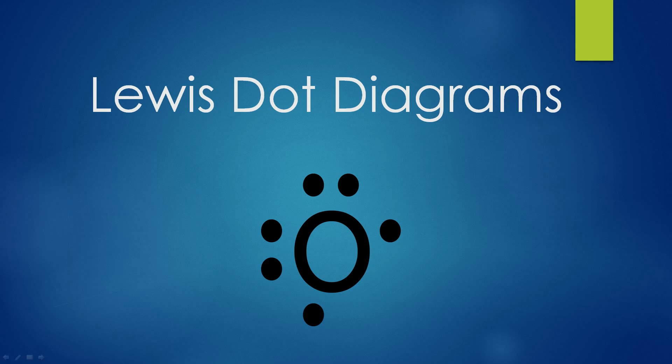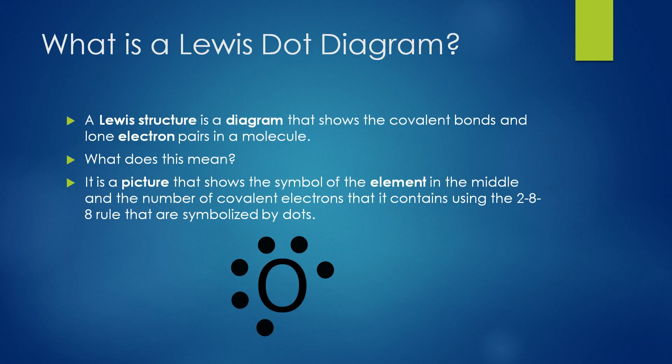Hi friends, welcome to the lesson. In this lesson, we are going to learn about Lewis dot diagrams. A Lewis structure is a diagram that shows the covalent bonds and lone electron pairs in a molecule. It is a picture that shows the symbol of the element in the middle and the number of valence electrons it contains, using the 2-8-8 rule, symbolized by dots.